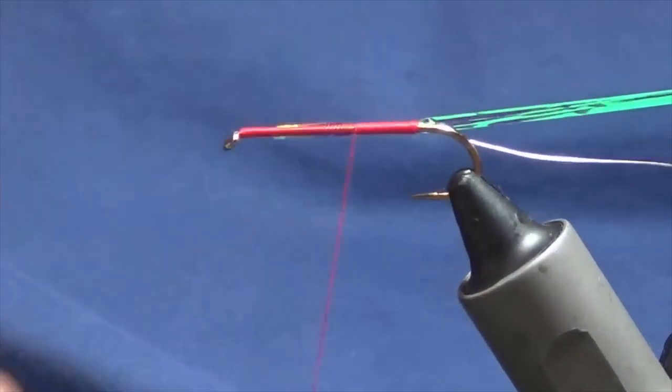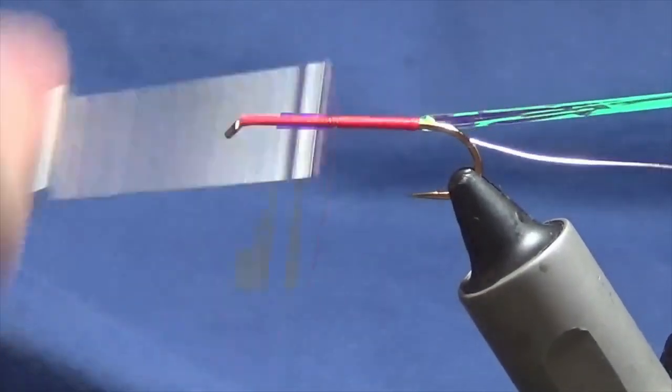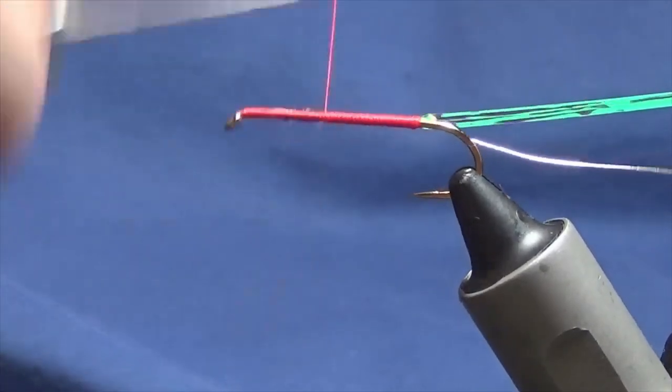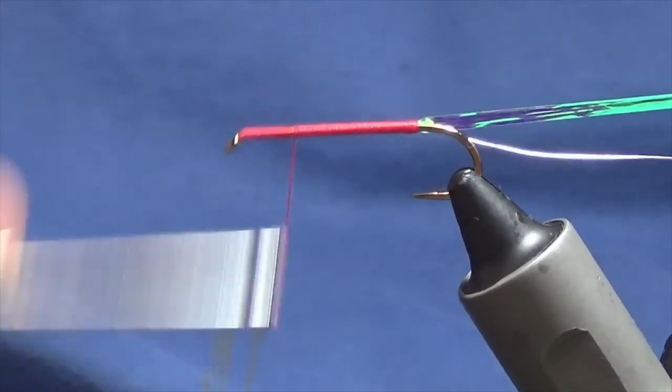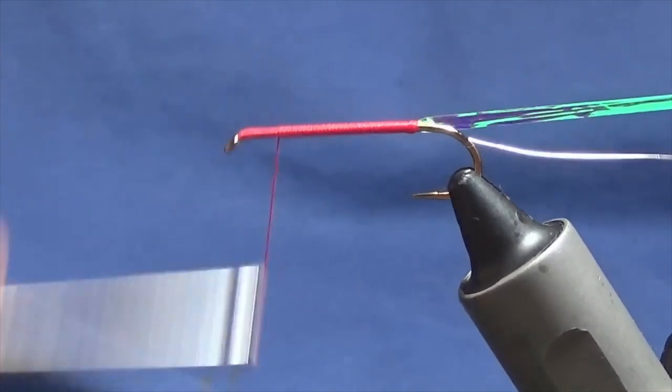Then just take your Glo-Brite floss number three if you're using this, or your thread, whatever you decide to use, and just run this up. It's a simple fly to tie, you can't go wrong with it.